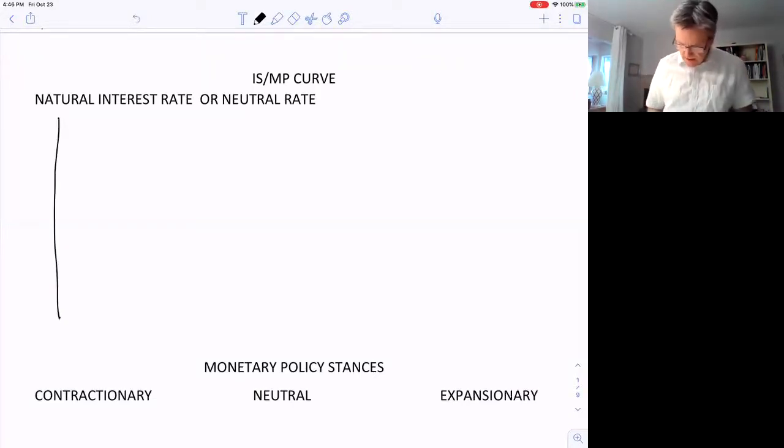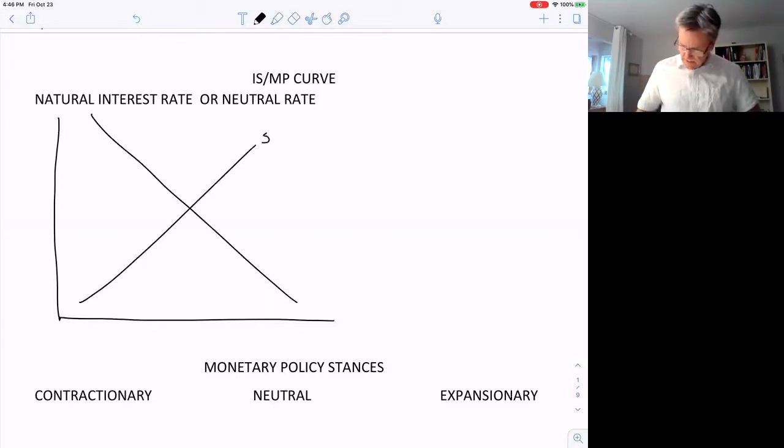If I redraw the savings and investment diagram here, we have savings and investment and the real interest rate on the y-axis and the quantity of savings and investment down here. At potential, where output is equal to potential, we're on the edge of the PPF, is where we'll be in the long run. In the long run, the interest rate here should be at this equilibrium we'll call R star. So R star is the long run equilibrium interest rate.